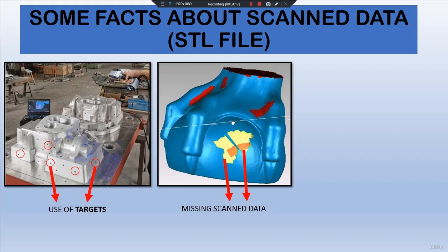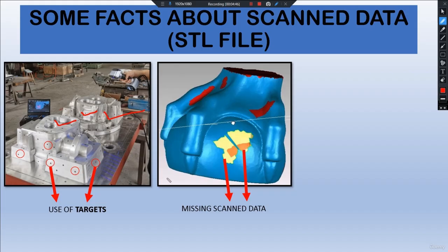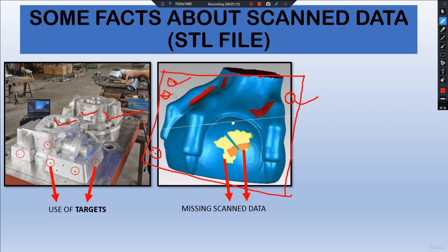Number two is missing scanned data. Sometimes the scanned file we receive has anomalies in it. These anomalies are not always harmful, but some require fixing, which can be done in various CAD tools. One may argue there are no visible targets in some cases — this is because when a component is very small, targets are placed on the table it rests on rather than on the component itself. Targets placed around the table are then used to compile the data after scanning from different angles.